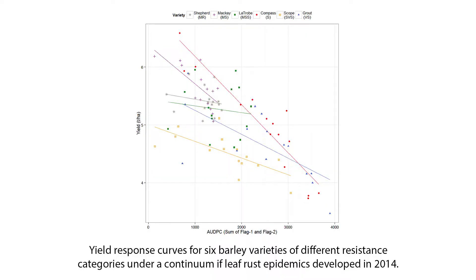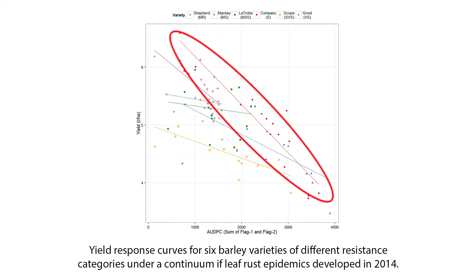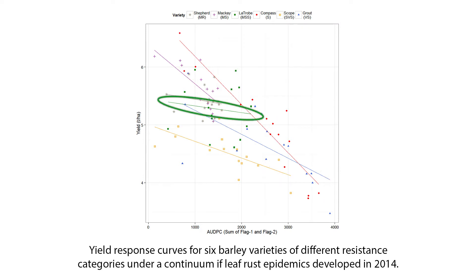We've produced disease loss curves on a couple of trials that we're confident are producing good data. The one for barley leaf rust features a couple of extremes. One of those is Compass, which in our environment is very susceptible to leaf rust, and it has produced a very steep slope on the graph, indicating that it loses a lot of yield per unit of disease increase. Whereas something like La Trobe, which we rate as MSS — it does have a bit of resistance — it loses very little yield per unit increase of disease.